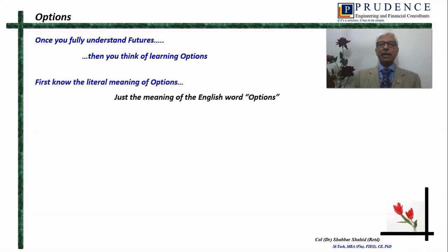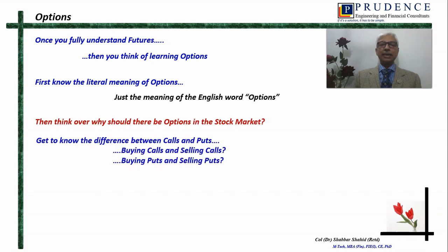First, you must try and understand the literal meaning of the word 'option.' It is a simple word — look for it in a dictionary or search on Google. Try to understand the meaning of this English word 'options,' then think over why there should be options in the stock market. I can say with quite a certainty that a large number of people who trade in options do not even know the meaning of that word in context of what they are doing.